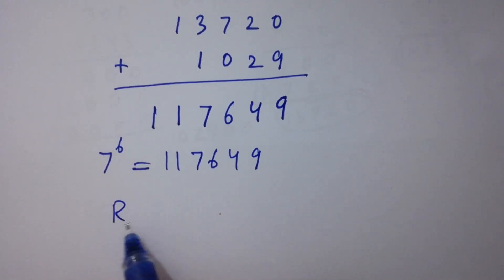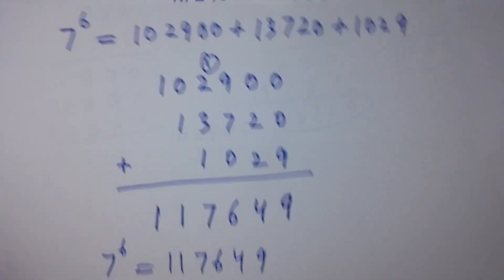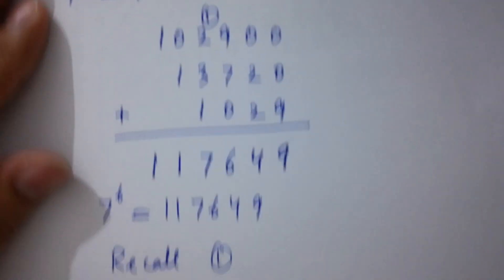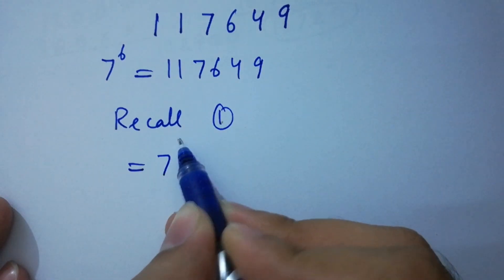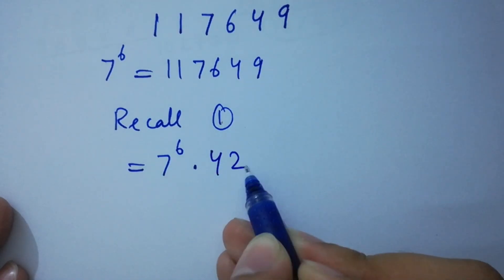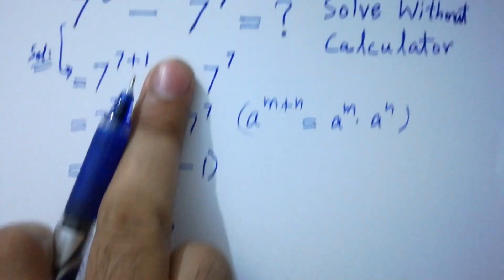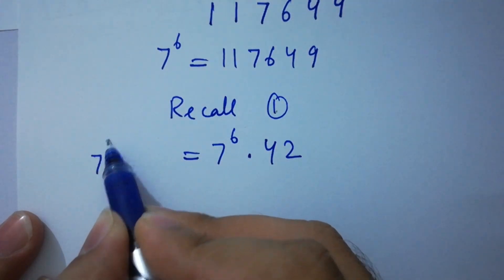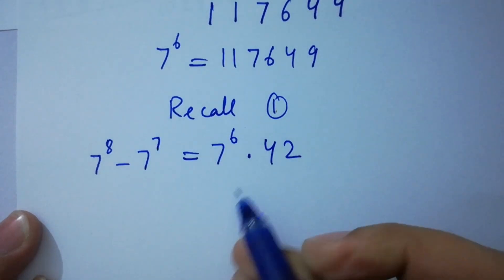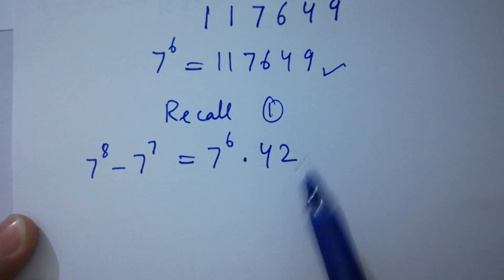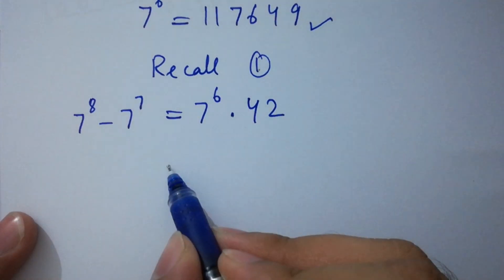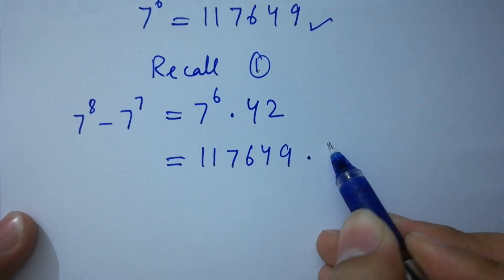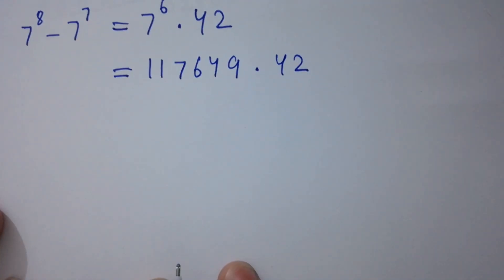Recalling the first equation, we have 7 to the power 6 times 42, which equals 7 to the power 8 minus 7 to the power 7. Since 7 to the power 6 equals 117,649, we can write this as 117,649 times 42. In the next step I am going to multiply them together.